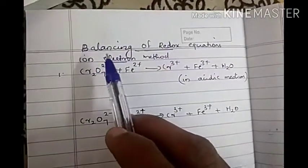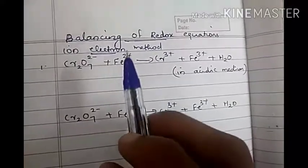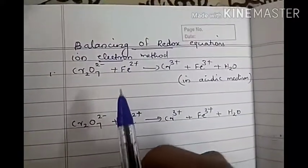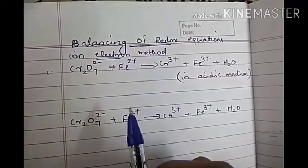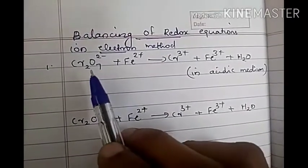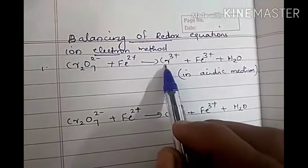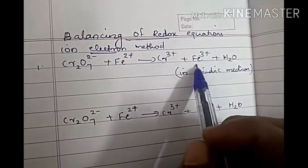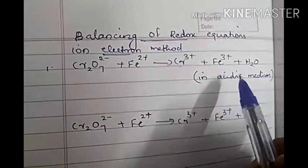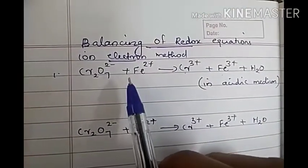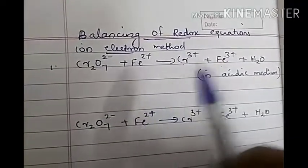In this video we can also study how to balance redox equations. There are two methods for balancing redox equations. The first method is the ion-electron method. The equation given is Cr₂O₇²⁻ + Fe²⁺ → Cr³⁺ + Fe³⁺ + H₂O in acidic medium, and we will study how to balance this redox reaction.